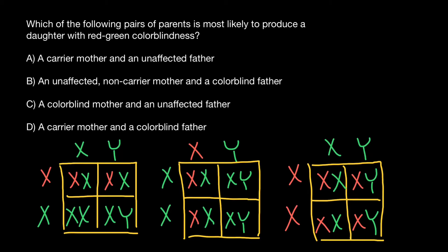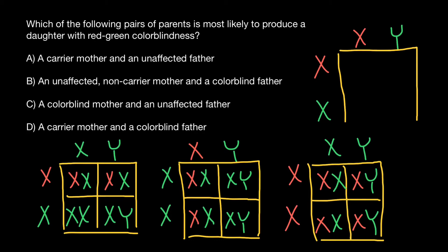Now we have the last variant: a carrier mother and a colorblind father. The genotype of the father is shown on top. This is our last Punnett square. The defective X chromosome comes from the mother's side, and the defective X chromosome also comes from the father's side.